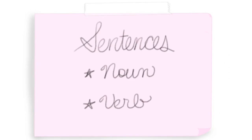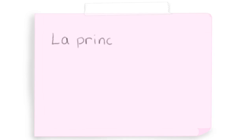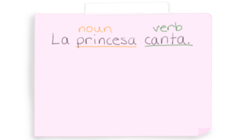In order to form a sentence, you must at least have a noun and a verb. For example, la princesa canta. Princesa is the noun and canta is the verb.